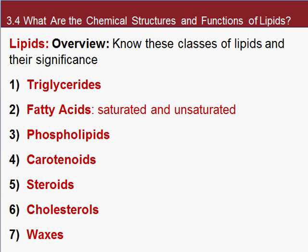That's all the lipids — a quick overview, but they're an important class of molecules with a wide range of functions. Here's a list of their significance: we had triglycerides, fatty acids, phospholipids important for plasma membranes, carotenoids, steroids, cholesterol, and waxes. You want to know these molecules, why they're important, and their general functions inside the cell. That's the end of chapter three. There's still one macromolecule we haven't talked about — nucleic acids — and that's where chapter four picks up.